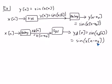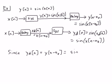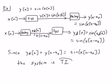Comparing the two results, yd(n) equals y(n - n0), and both are equal to sin(x(n - n0)). Since yd(n) = y(n - n0), the system is time invariant.